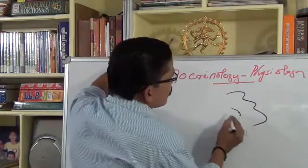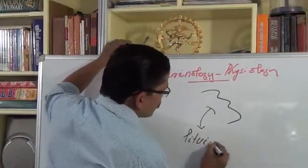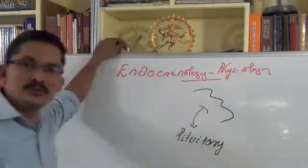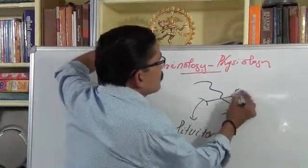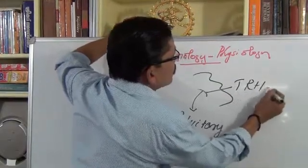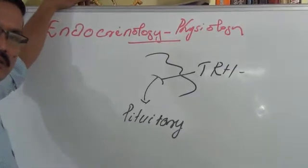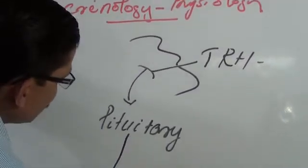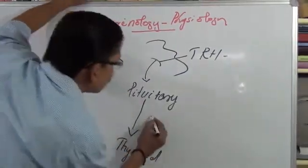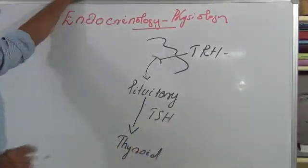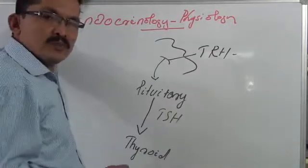The hypothalamus gives orders to the pituitary to stimulate the thyroid via thyrotropin releasing hormones. So from the hypothalamus it gives stimulation to the pituitary, and pituitary gives stimulation to the thyroid gland for a hormone known as TSH. This is the basic mechanism, otherwise known as the feedback mechanism.